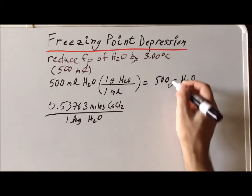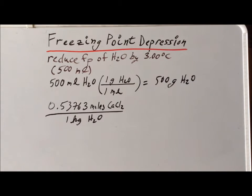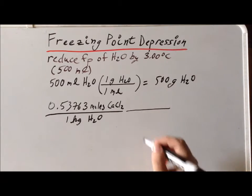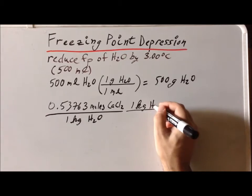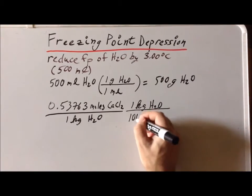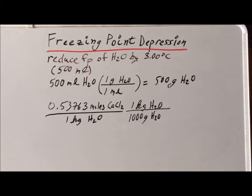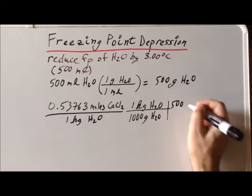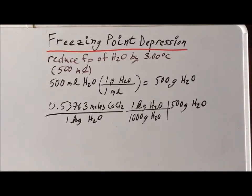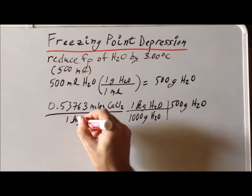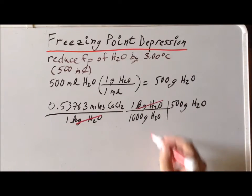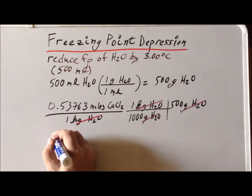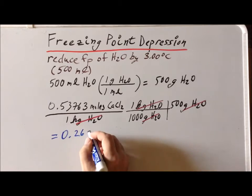We want to figure out how many moles of calcium chloride we need for 500 grams. A nice way to achieve this is to use our conversion factor that one kilogram of water consists of a thousand grams of that substance. We know that we need this for 500 grams of H2O. We can see that if we cancel units properly, kilograms of water will cancel, grams of H2O will cancel, and we'll have determined how many moles of calcium chloride need to be added to the 500 milliliters of water. We see that we're going to require 0.2688 moles of calcium chloride.